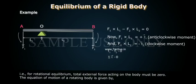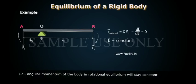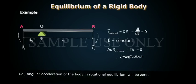For rotational equilibrium, the total external torque acting on the body must be zero. The equation of motion of a rotating body gives: τ̄_external = Στ̄ᵢ = dL̄/dt = 0, so L̄ = constant. That is, the angular momentum of the body in rotational equilibrium stays constant. Since τ̄_external = Iᾱ = 0, therefore ᾱ = 0 — the angular acceleration of the body in rotational equilibrium is zero.